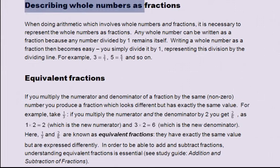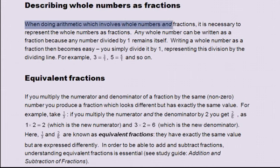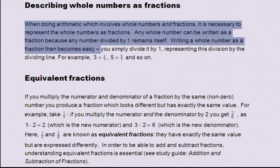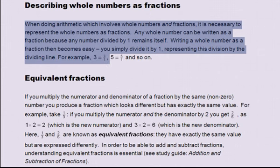Describing whole numbers as fractions. When doing arithmetic which involves whole numbers and fractions, it is necessary to represent the whole numbers as fractions. Any whole number can be written as a fraction, because any number divided by one remains itself. Writing a whole number as a fraction becomes easy — you simply divide it by one, representing this division by the dividing line. For example, three equals three divided by one, which is a fraction; five equals five divided by one, and so on.